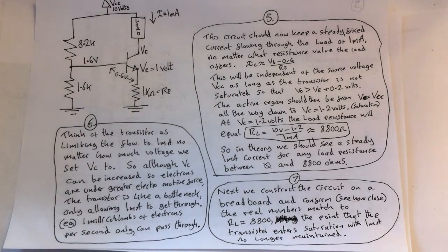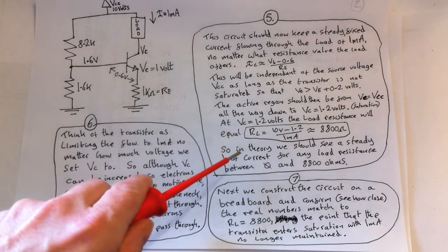Here it just repeats that the active region should then be from VC equals the voltage source all the way down to VC equals 1.2 volts, which is at saturation. At VC 1.2 volts the load resistance will equal, so you can calculate now by knowing that we're going to get down to 1.2 volts.